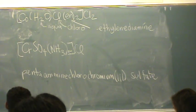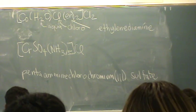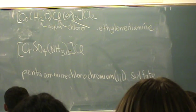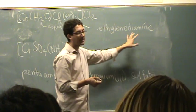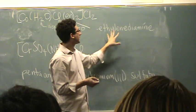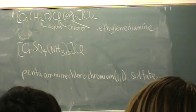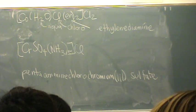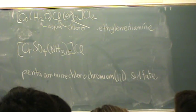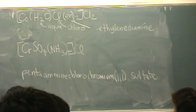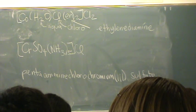So we've got ethylenediamine. Now, there's two of them. Normally we would say diethylenediamine; however, that's confusing because diethylenediamine is something else — there's two ethylenes and two amines. This is two ethylenediamines. So there's a special prefix whenever you have polydentates, and it ends with 'is': bis, tris, tetrakis, pentakis, etc.